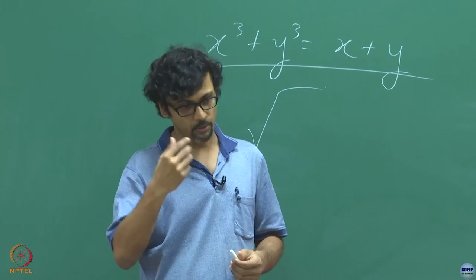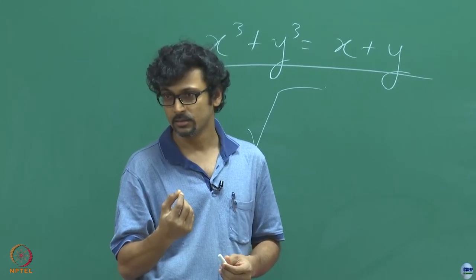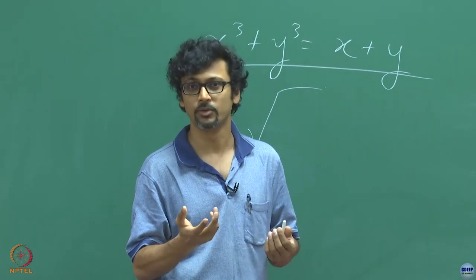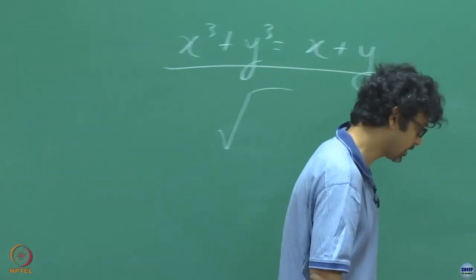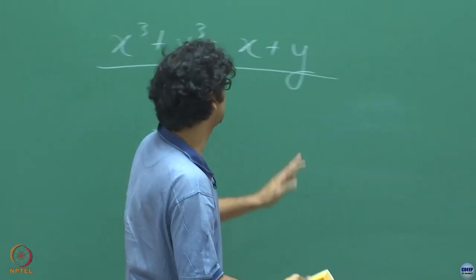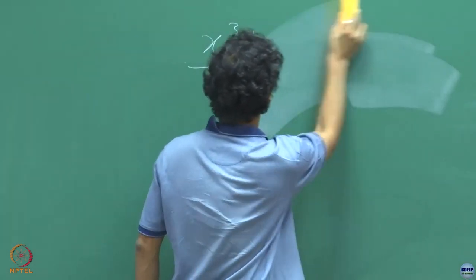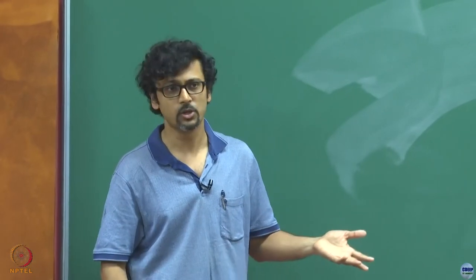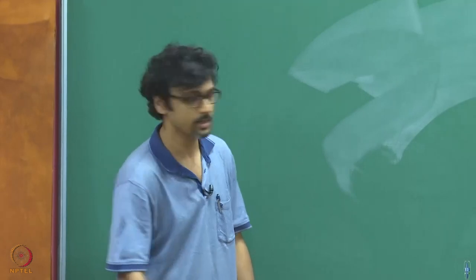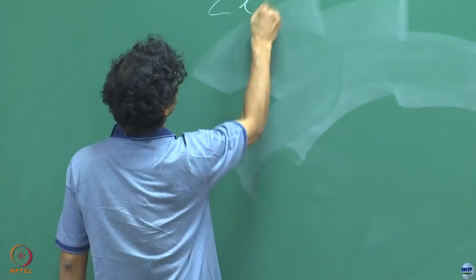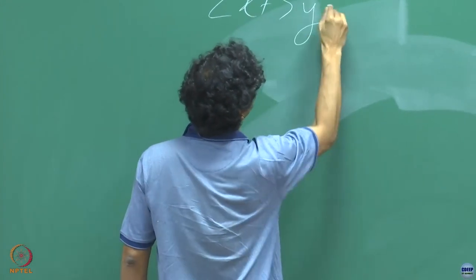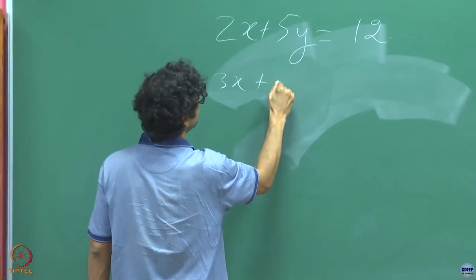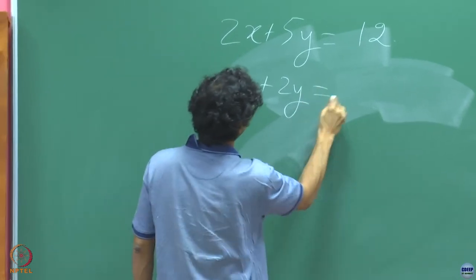In general, are we looking for solutions that are real, natural numbers, complex numbers, and so on? But all that in good time. Before that, let us do some usual routine stuff that you are familiar with. As I said, it is linear algebra, so you will be solving linear equations of the form: 2x + 5y = 12 and 3x + 2y = 7.